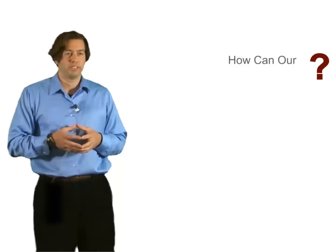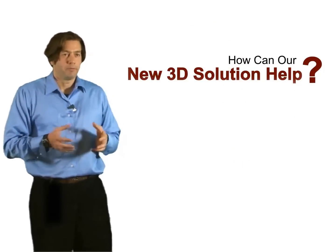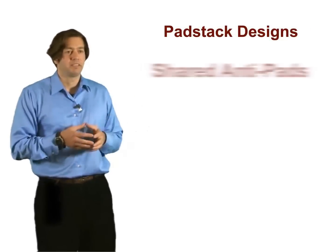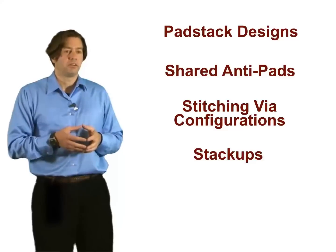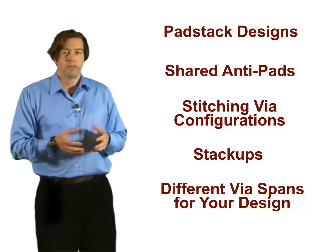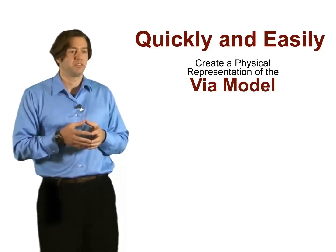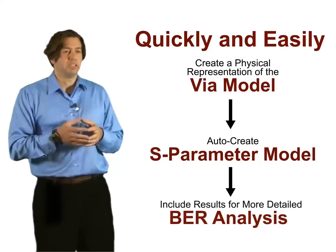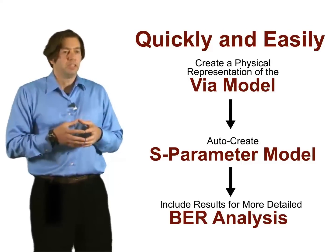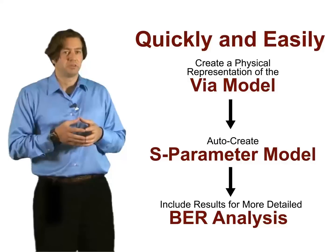So what can a user accomplish with the new 3D VIA solution within HyperLINX? Firstly, they can study trade-offs between various physical characteristics of the VIA design, such as pad stack designs, shared anti-pads, stitching VIA configurations, various stack-ups, and a collection of different VIA spans for a given design. The goal is to optimize the VIA in such a way that it is transparent to the signal propagating down the link. Users can quickly and easily generate a physical representation of the VIA model, initiate a 3D solver, and then see the results intuitively in an S-parameter model, or include them in the channel for a full-link time-domain analysis resulting in the bit error rate.